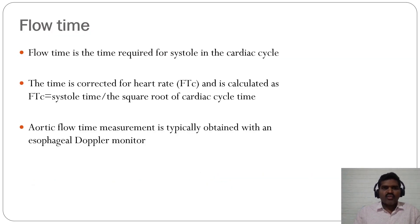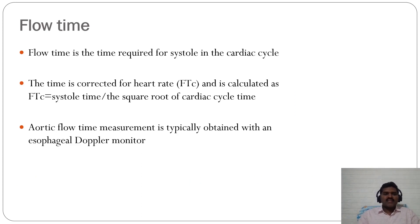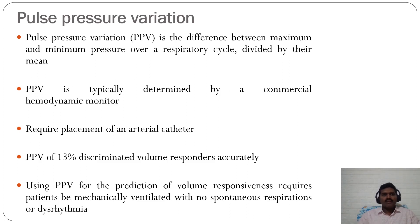Flow time is the time required for systole in the cardiac cycle, corrected for heart rate. Corrected flow time (FTc) = systolic time / √(total cardiac cycle time). Flow time measurements are typically obtained with an esophageal Doppler monitor.